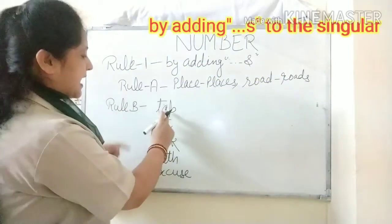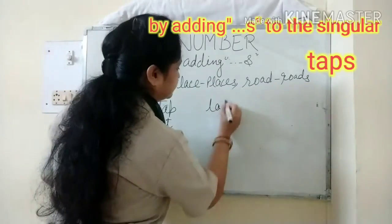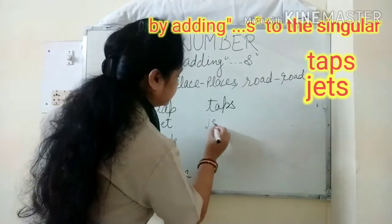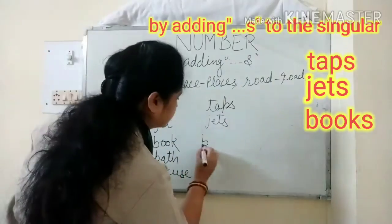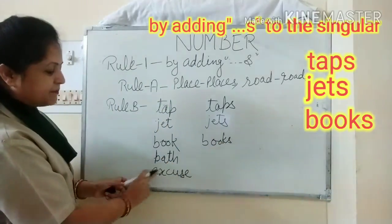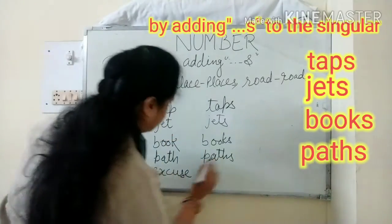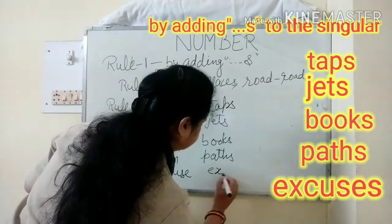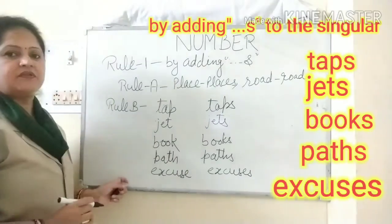So converting into plurals: the plural of tap is taps; the plural of jet is jets; the plural of book is books; the plural of path is paths; and the plural of excuse is excuses. This is our first rule.